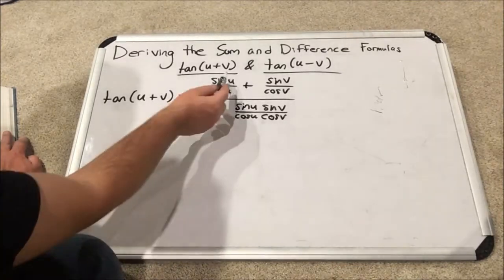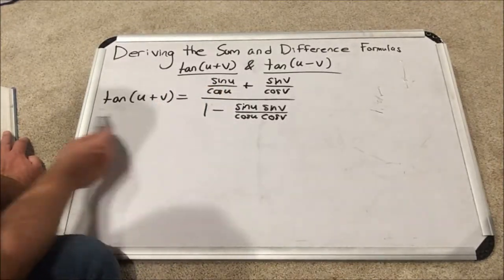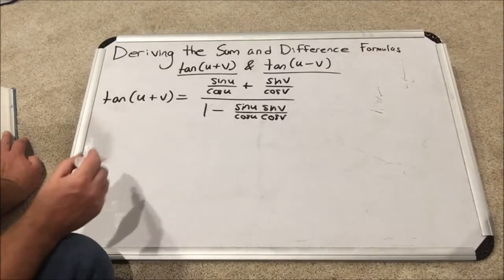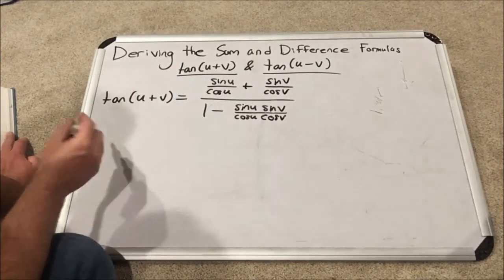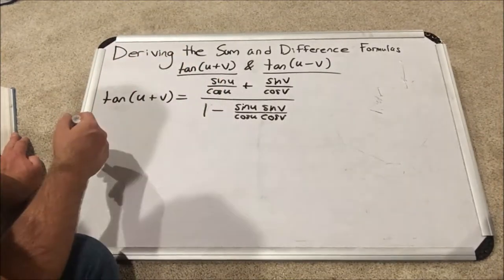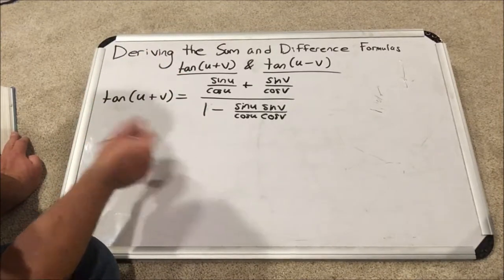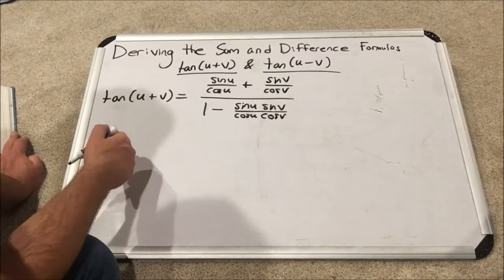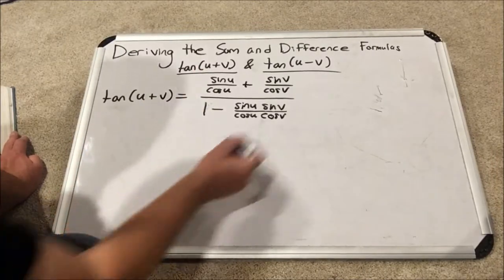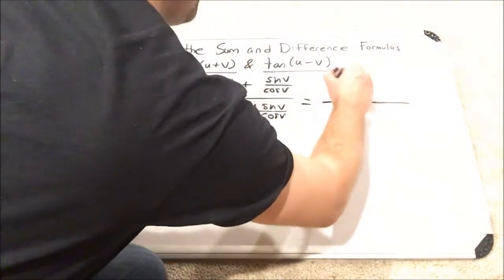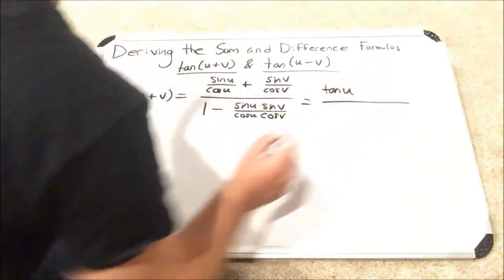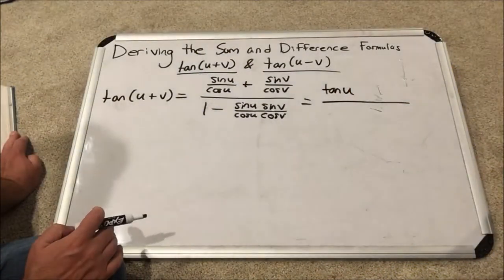So now, remind yourself of where we started this whole derivation at tangent u plus v. What we have at the top, the sine of u over cosine u, well, using the quotient rule for tangents, the quotient identity rather, well, that's just tangent u. I can start to see this shaping up.